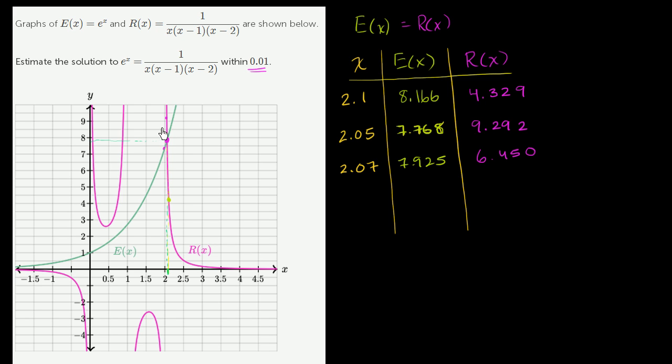So at 2.05, that was too low. 2.07 is too high. Now R(x) has dropped below e(x). So we know the right answer is between these two numbers. And so if we select 2.06, that's definitely going to be within 0.01 of the right answer.